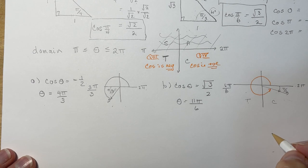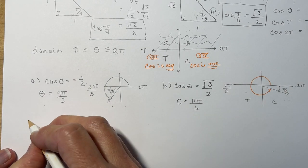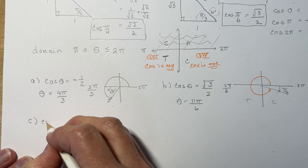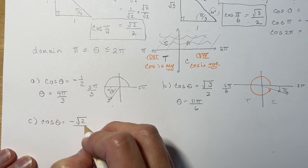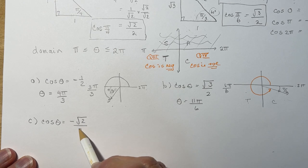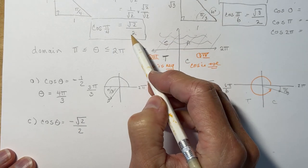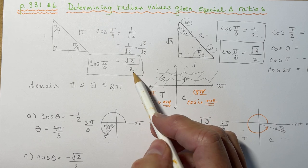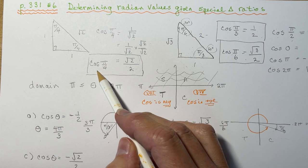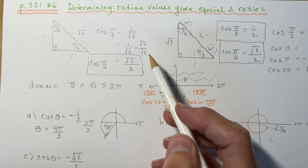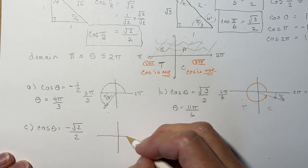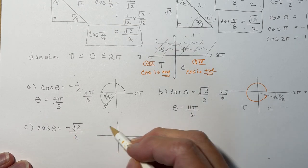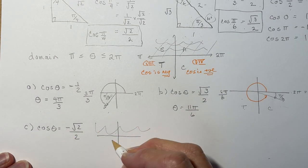So we can keep going here. Let's do them all. C says cos theta equals minus root 2 over 2. Now again, you would have had to know to rationalize the denominator to get this ratio here. That's the ratio for cos of pi over 4, or 45 degrees. So this time, cos is negative. So because cos is negative, we're not up here at all. We're 45 degrees here, or pi over 4, from this axis.